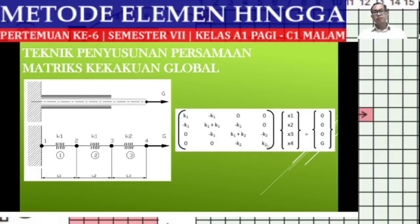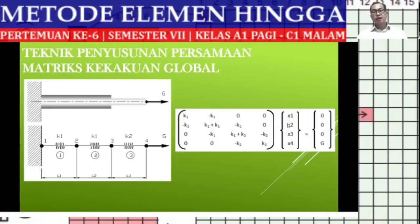So we obtain the global stiffness matrix equation. Next, the variables we want to find are placed here on the right side, where X1 to X4 are the nodal displacements. The external forces are placed after the equals sign. At nodal 4, there is an external force of magnitude G.